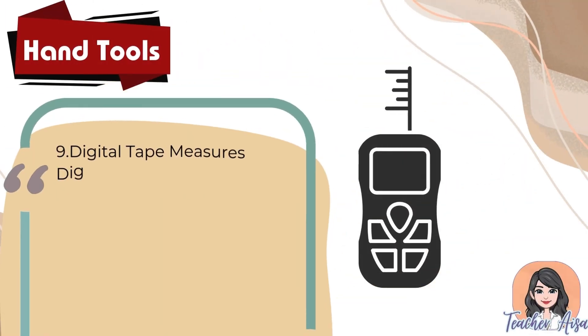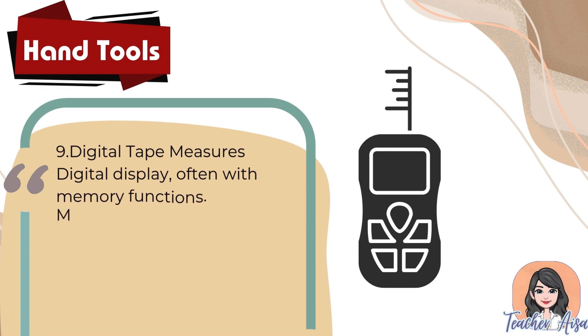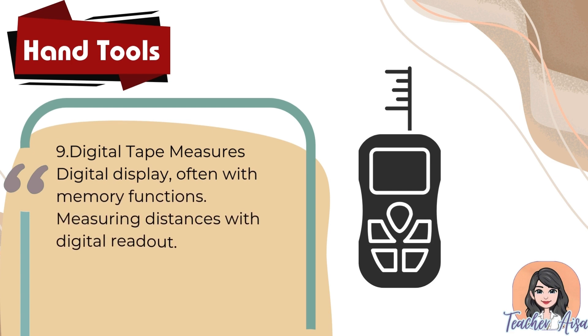Nine: digital tape measures. These have a digital display, often with memory functions, for measuring distances with a digital readout.